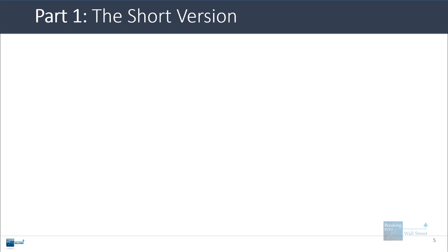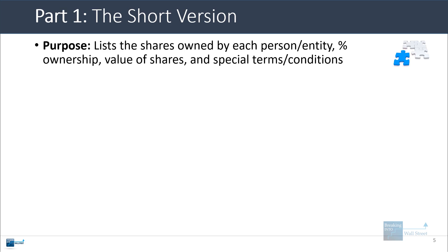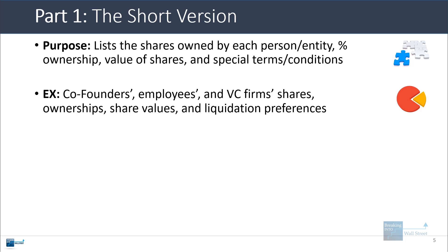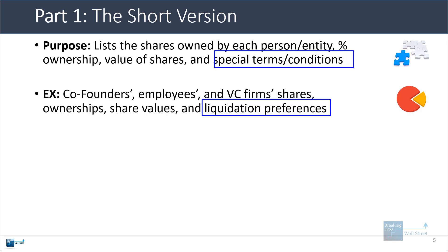A capitalization table, or cap table, lists the shares owned by each person or entity, the percent ownership they have, the value of those shares, and any special terms and conditions associated with those shares. For example, you could have the co-founders, the employees of the firm, and the venture capital firm's shares — you list all their ownerships, share values, and liquidation preferences.